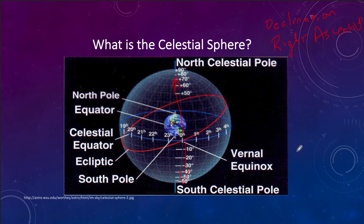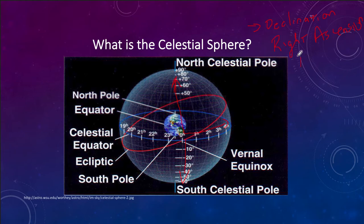They also use right ascension, which is a way of measuring the longitude on the sky — how far you are around. On Earth we measure longitude in degrees; on the sky we measure it in hours. It is 24 hours around the entire sky. You can measure the various positions of an object by how far it is north or south of the celestial equator — that's its declination — and how far it is east or west of a point called the vernal equinox, which is the reference point for right ascension. That gives us an exact location of any object in the sky, allowing astronomers to point their telescope in the right direction.